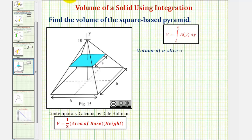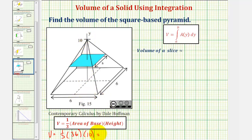Using the basic volume formula, the volume of the pyramid is equal to one-third times the area of the base. Notice how the base is a six-by-six square, and therefore the area of the base would be 36, times the height, which we can see would be 10. One-third times 36 is 12, and 12 times 10 equals 120. So the volume is 120 cubic units.